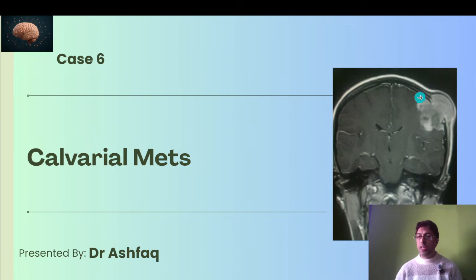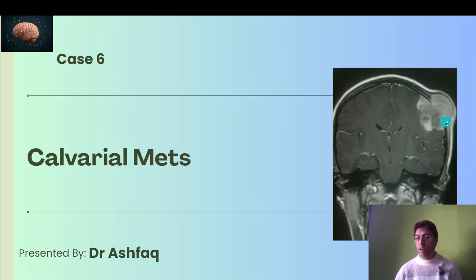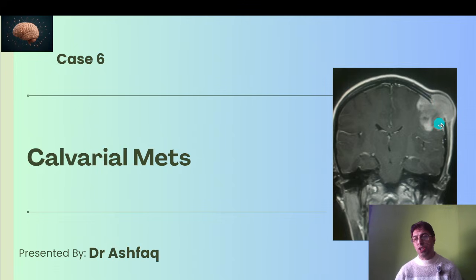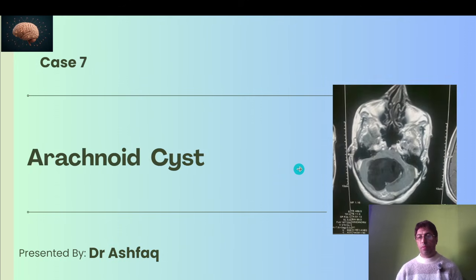Here you see the calvaria — the skull cap — and a very interesting case: calvarial metastasis. These can be local or from different parts of the body. You notice the area of calvarial metastasis — not that common, which is why it's highlighted here. You can see the outer and inner diploic space with a well-marked lesion projecting between the diploë — this is calvarial metastasis.